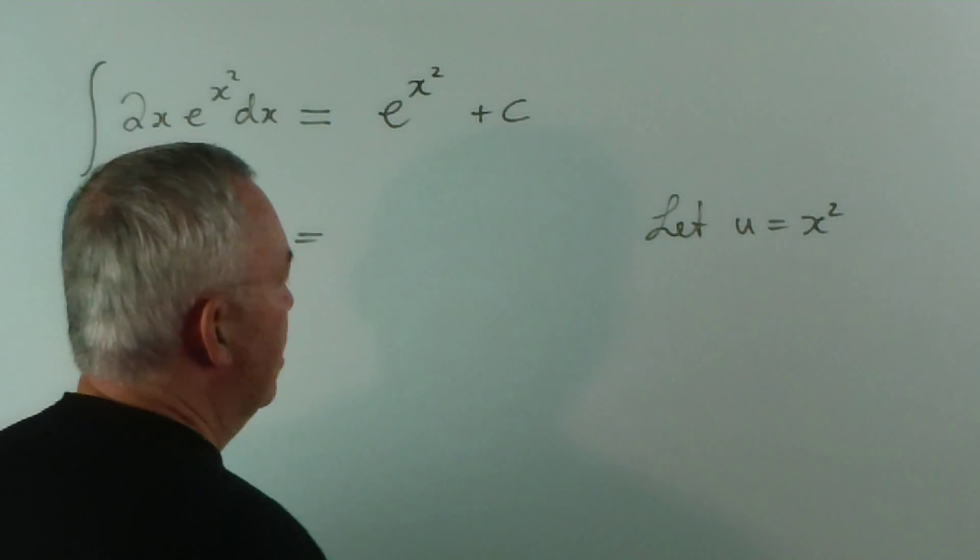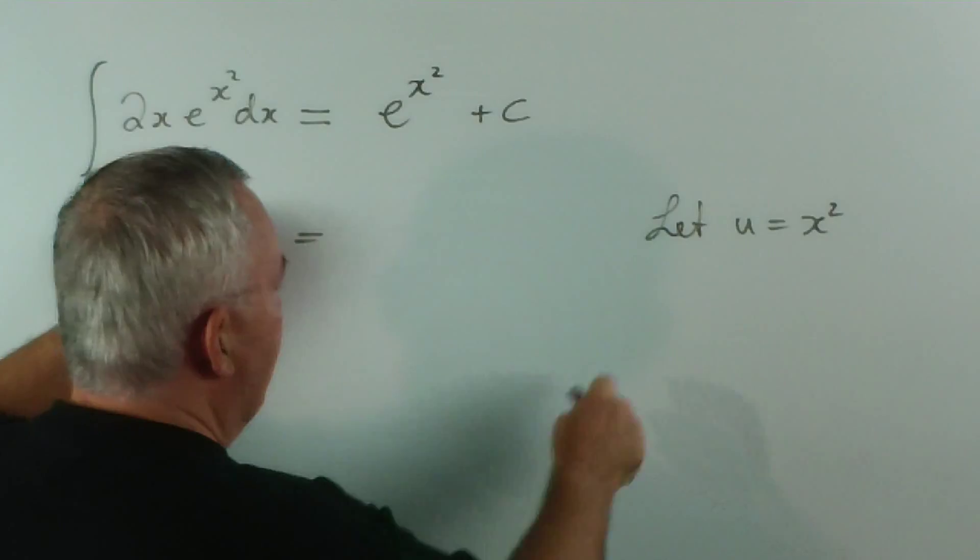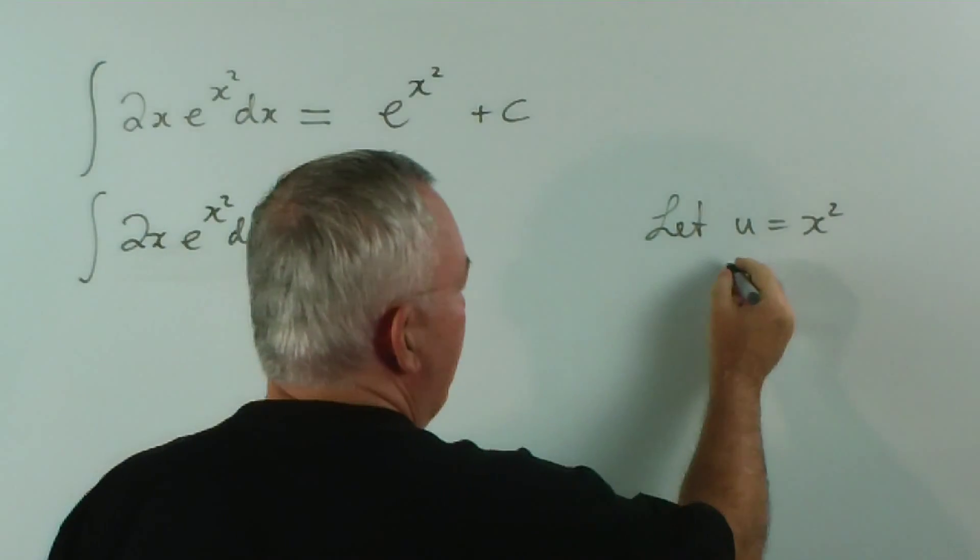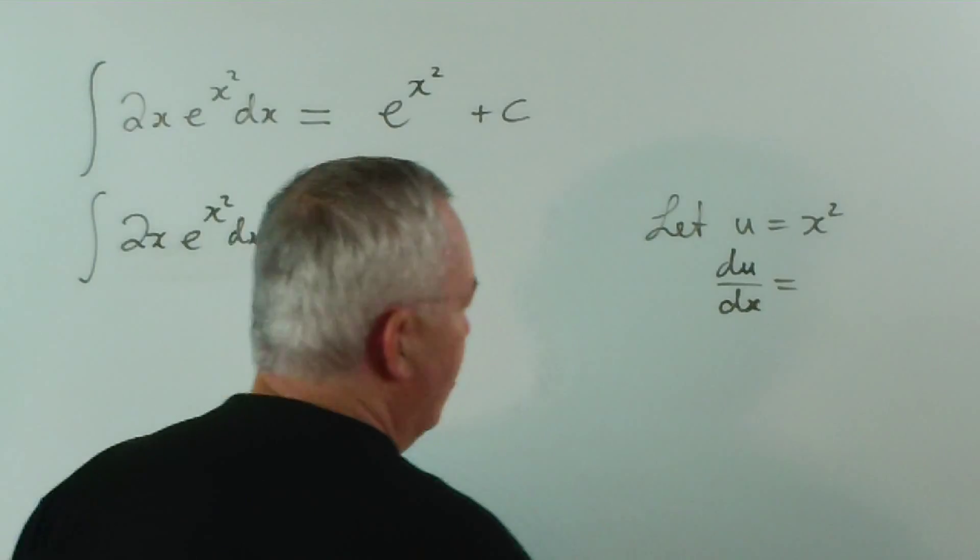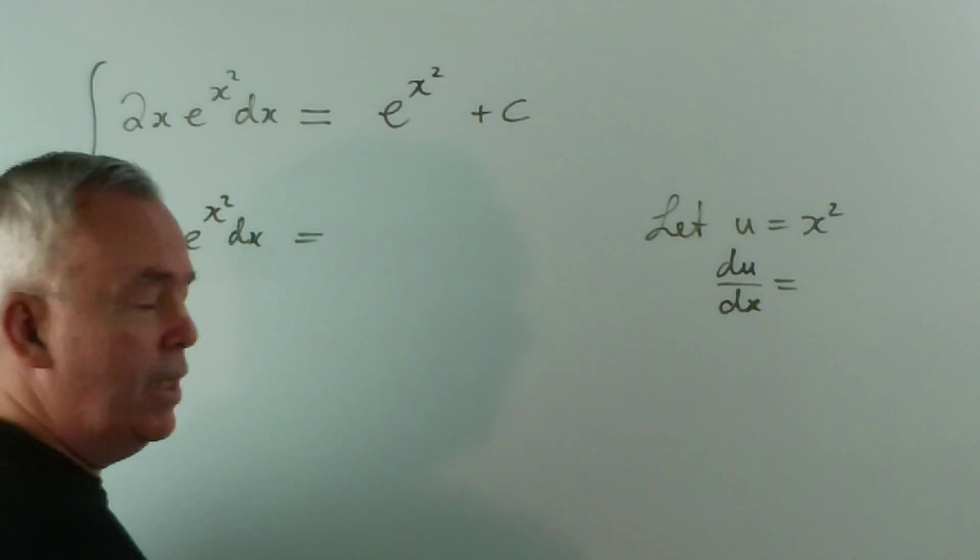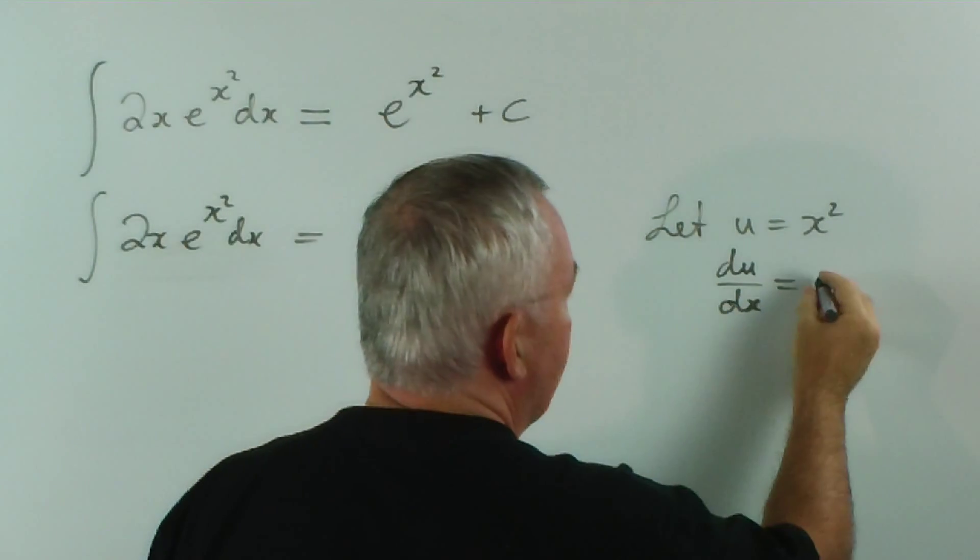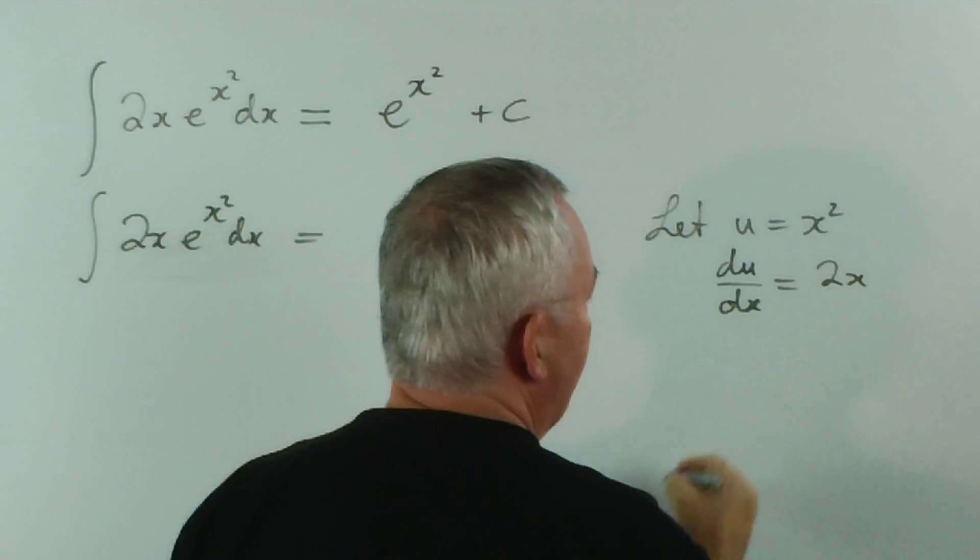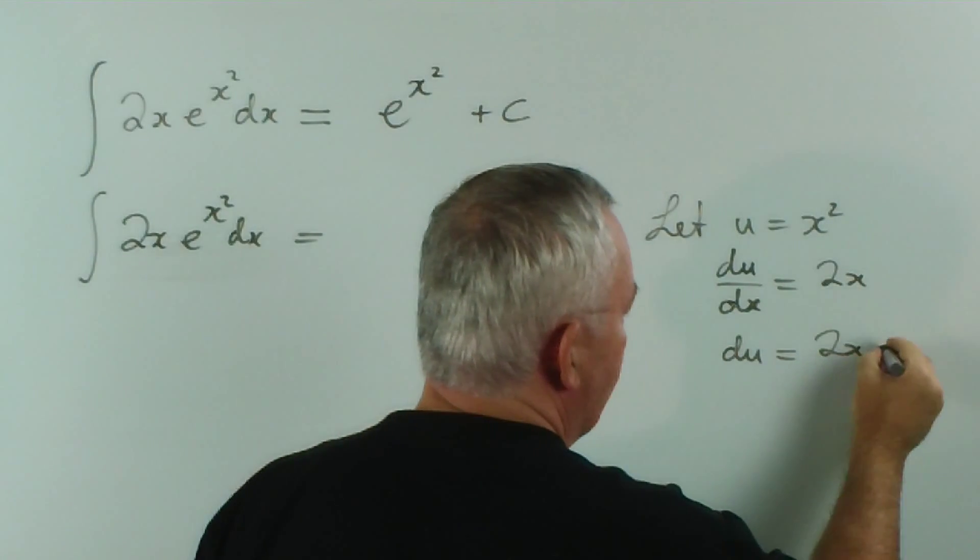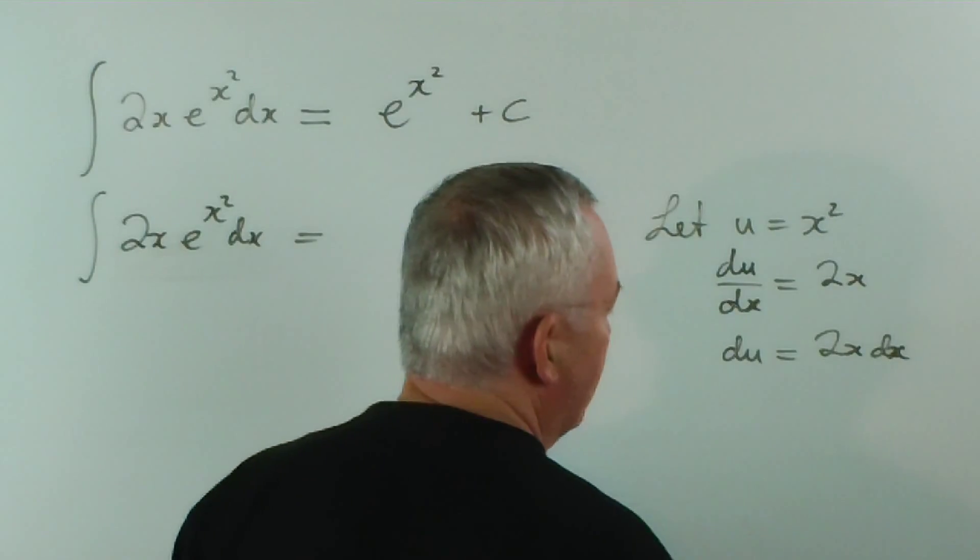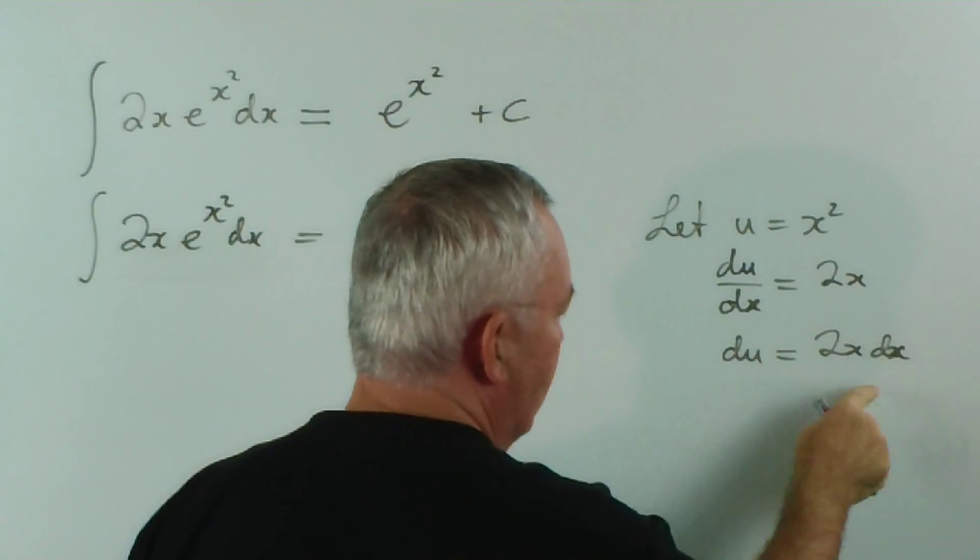So we're replacing that x squared with a u. That means du dx... We've got to do this to find out what to do with our dx. Our du dx is 2x. Therefore, du equals 2x dx, just by multiplying both sides by dx.